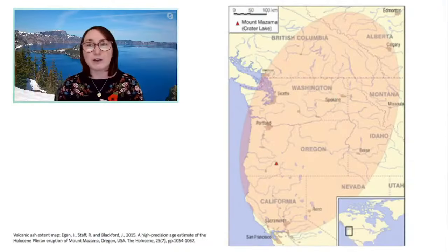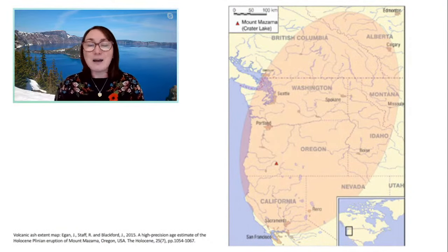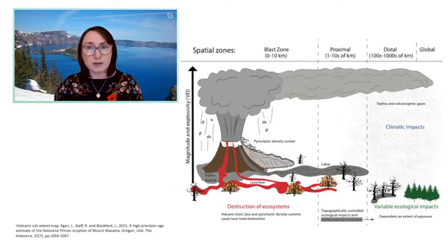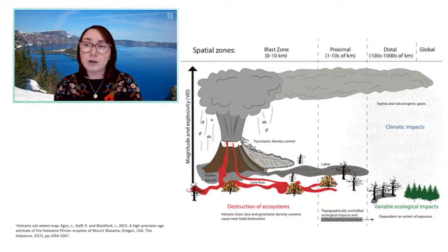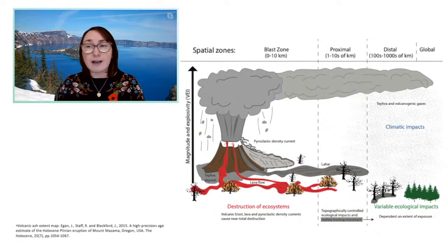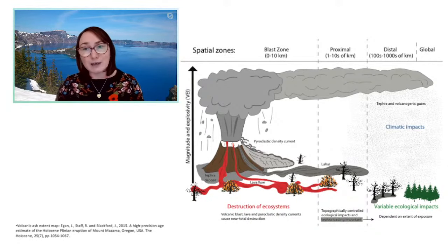We can look at what's happening right next to a volcano — the proximal impacts, where lahars and pyroclastic flows obviously kill everything around it. But further away, we start to question what the actual impact is, and that's where volcanic ash becomes more important. At more distal locations, hundreds of kilometers away, the impacts can be quite variable. I've especially looked at the impact on vegetation in a forest and on the chemistry of a lake.